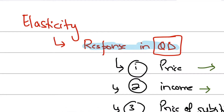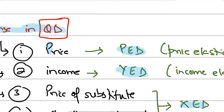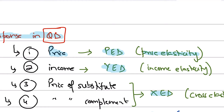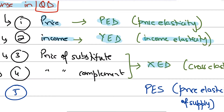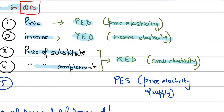Elasticity means response in quantity demanded. If that response is due to a change in price, it becomes price elasticity of demand. If that response is due to a change in income, it becomes income elasticity of demand. If that response is due to a change in the price of substitutes or the price of complements, it becomes cross elasticity of demand.